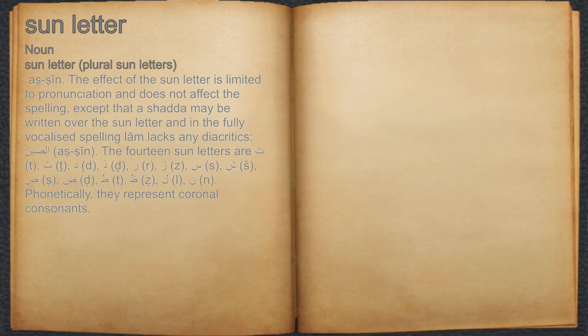The sun letter suppresses the sound of the L and then geminates. L plus N equals AN. The effect of the sun letter is limited to pronunciation and does not affect the spelling, except that a shadda may be written over the sun letter, and in the fully vocalized spelling, LAM lacks any diacritics.